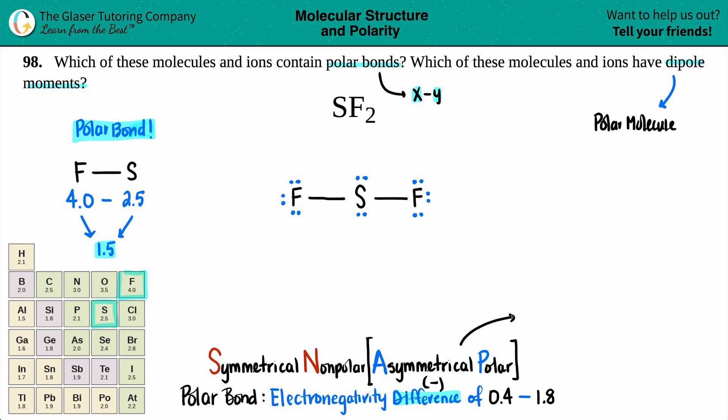So now there's a really big key piece of information that I want to tell you guys here is that before you even look at who is on the outside, always start with your central atom. Because if your central atom has lone electrons, so you're looking for those dots. If your central atom has dots, right off the bat, that molecule is going to be polar.